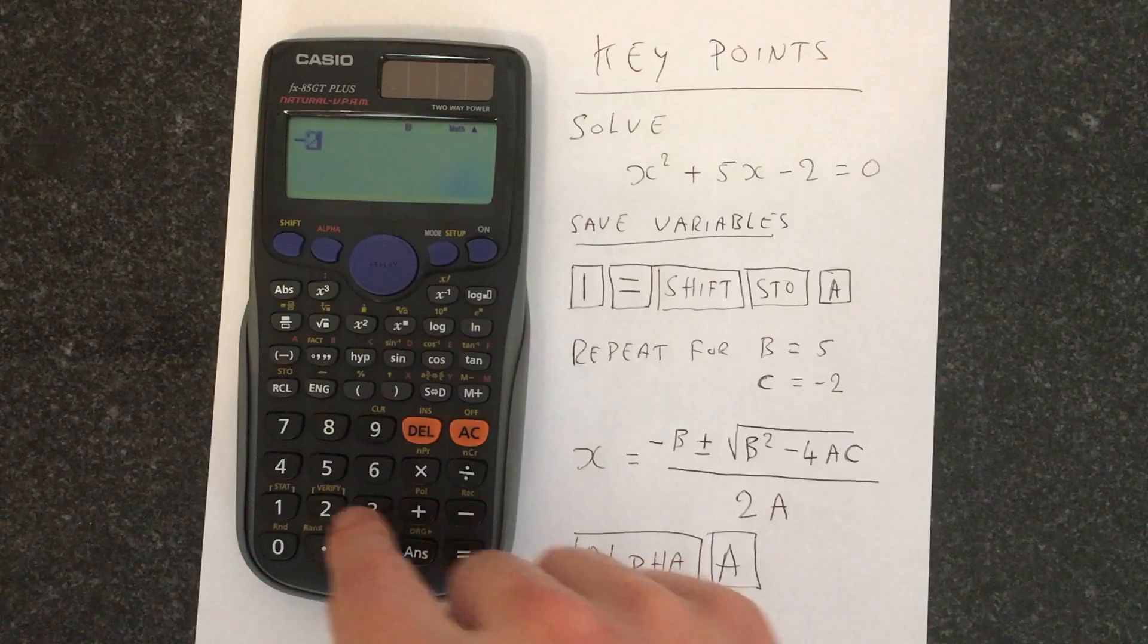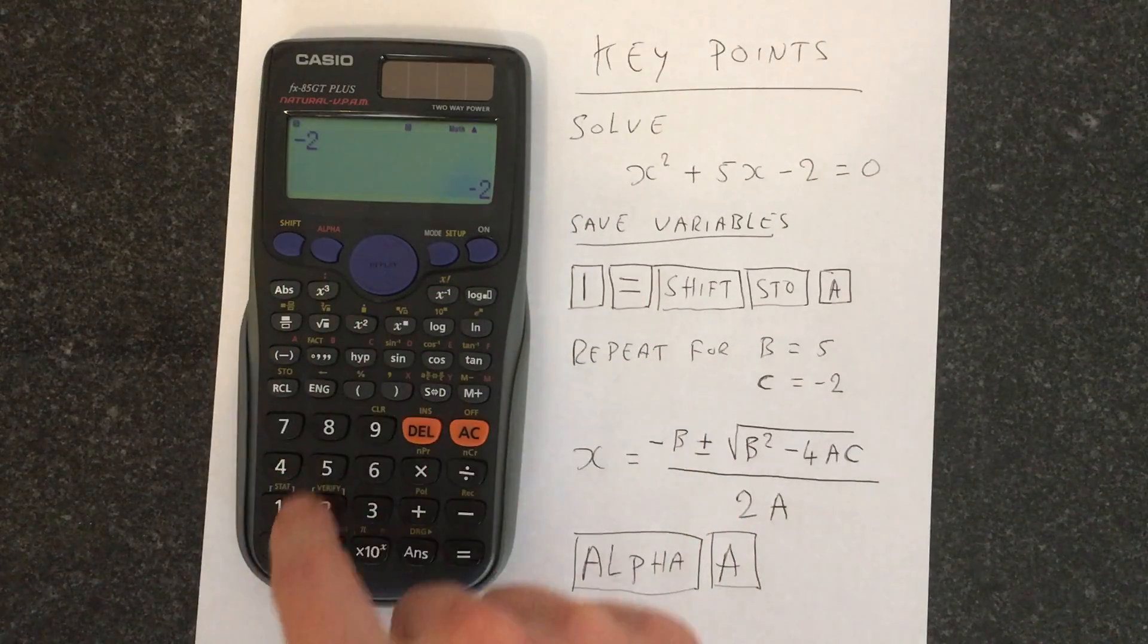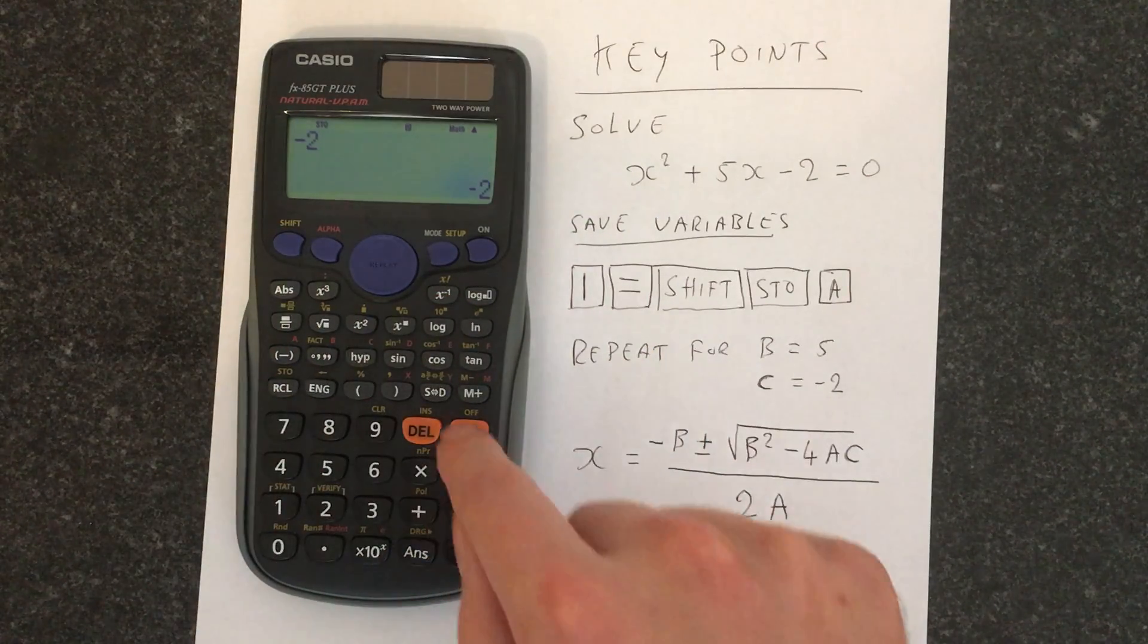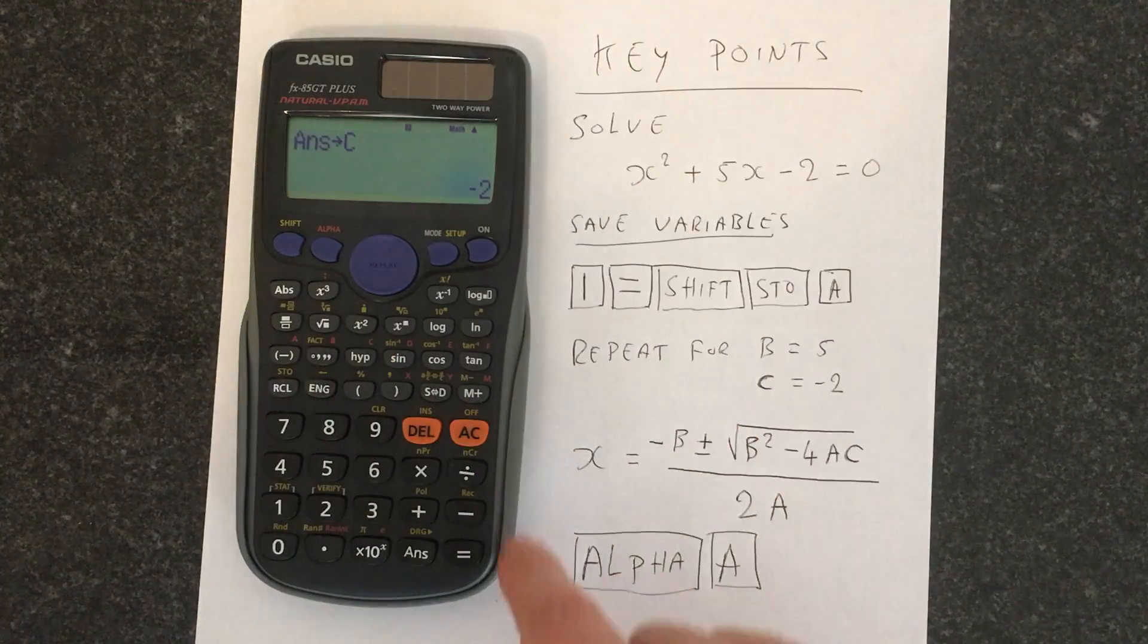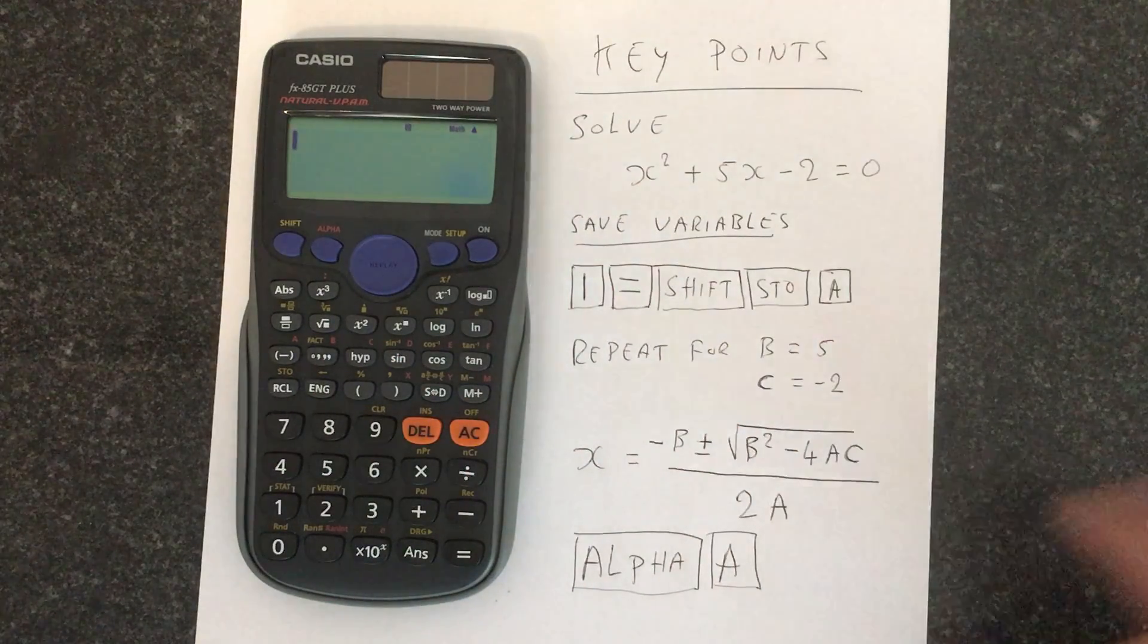And then we're pressing minus 2 equals shift, then STO, and then we're putting that into memory c. So we've now filled a, b, and c with the correct values.